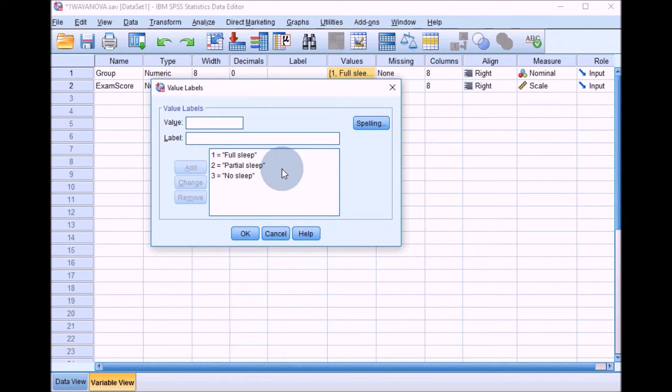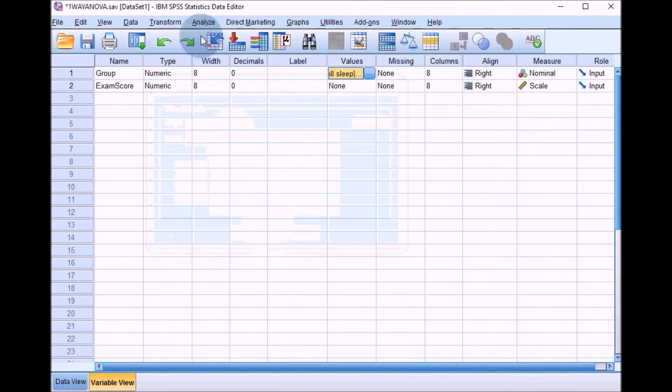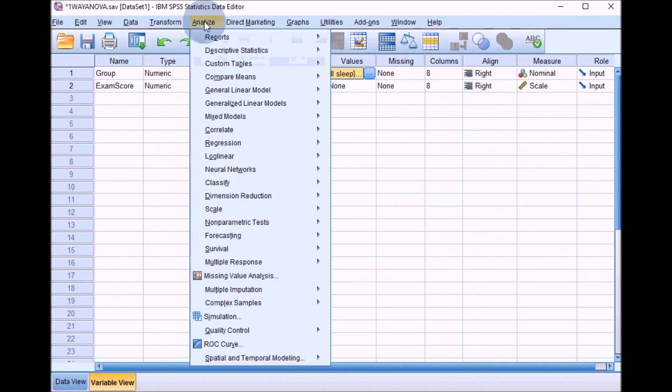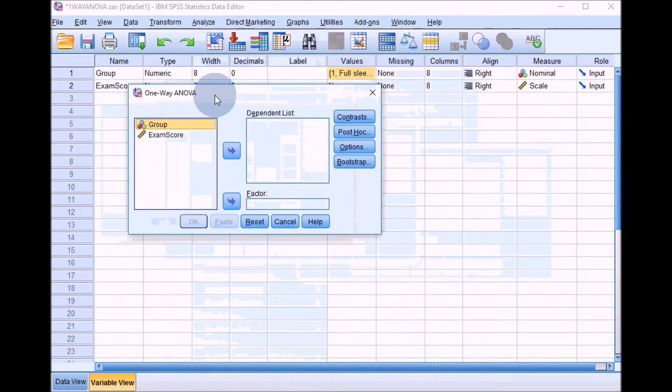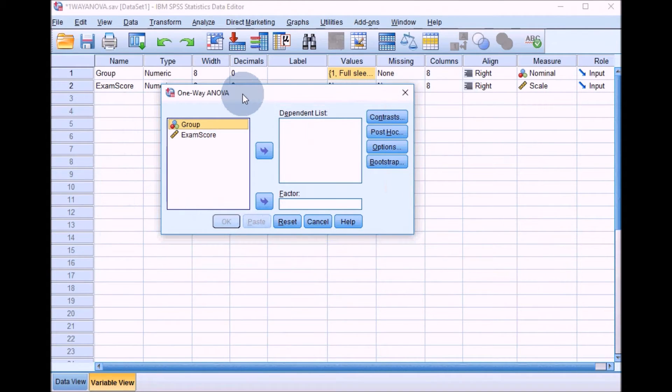We need to do a one-way ANOVA. We'll conduct the overall ANOVA first and then go into some post-hoc tests. To run the ANOVA, go to Analyze and Compare Means, and this time down to One-Way ANOVA.